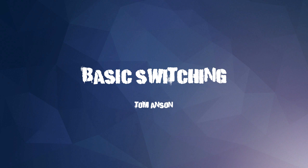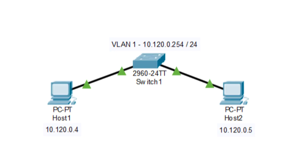The question I would ask if somebody told me this is: how is this possible, since a ping points to an IP address? Let's take a look at our topology. We have host 1 with the IP address 10.120.0.4 and host 2 with the IP address 10.120.0.5. We do have a VLAN interface of 10.120.0.254 which we won't be using in this lecture, but we'll need it in later lectures. In this case, host 1 is going to want to ping host 2 at 10.120.0.5, and we'll see how the switch handles this situation.